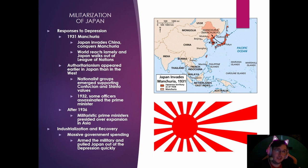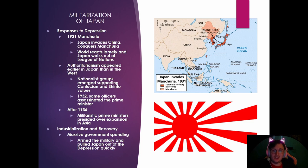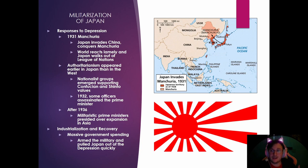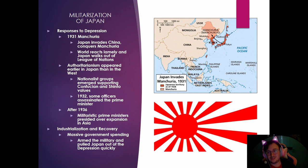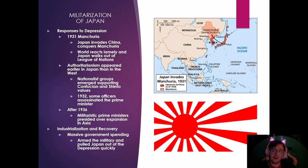In response to the Great Depression, Japan invaded China and conquered Manchuria. Their 21 demands were not met, so Japan said they would just invade. The League of Nations wagged its finger at Japan but could do nothing. Authoritarianism appeared earlier in Japan than in the West. Nationalist groups emerged supporting Confucian and Shinto values. By 1932, the military began assassinating prime ministers, and by 1936 most prime ministers and generals were militaristic. Japan heavily spent on militarization, armed its military, started conquering territory, and pulled out of the Great Depression rather quickly.